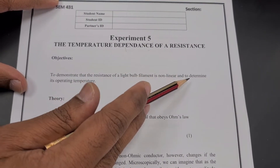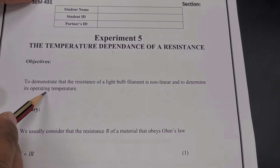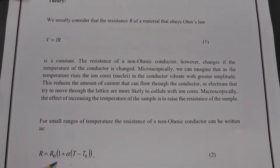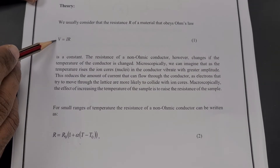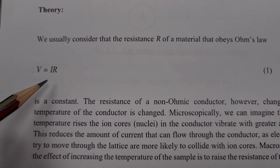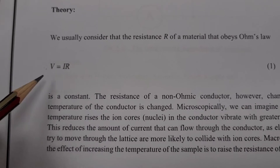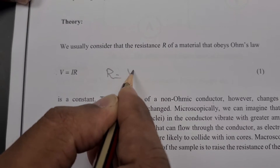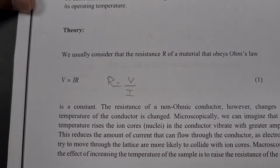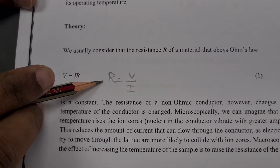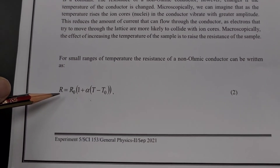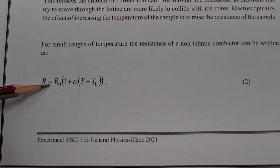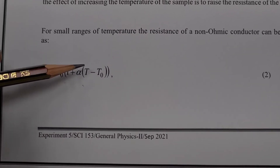By using this, we are going to find what temperature it is operating. For this experiment, we are going to use two equations. This first equation is V = IR, for our table part. By using this equation, we are going to calculate the resistance — R = V/I. We have to use this equation in the table. But for the data analysis part, we are going to use this second equation.